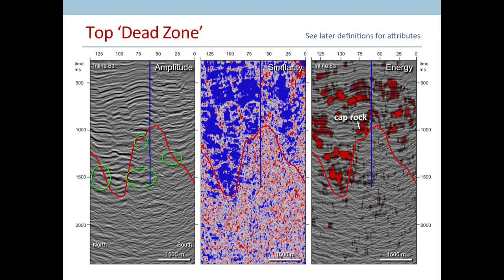We noticed that amplitude, semblance, and energy, all in their own graphical way, delineate different properties of the geothermal system. Amplitude shows the stratigraphy and the layering. Similarity shows discontinuities and this metamorphosed zone.